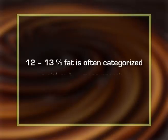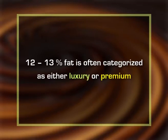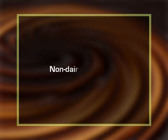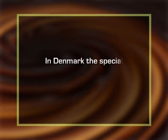Ice cream can be divided into a number of categories, as legislation varies from country to country. The fat content typically determines the category: in some countries fat must exceed 9% to qualify as ice cream; below this level the product is called milk ice, while ice cream with more than 12–13% fat is categorized as luxury or premium. The fat can be of animal or vegetable origin; if vegetable, legislation in many countries dictates the product cannot be called ice cream and may be labeled non-dairy ice cream.